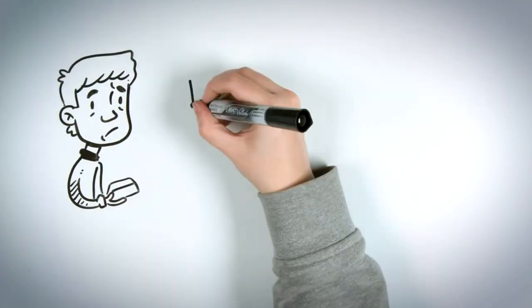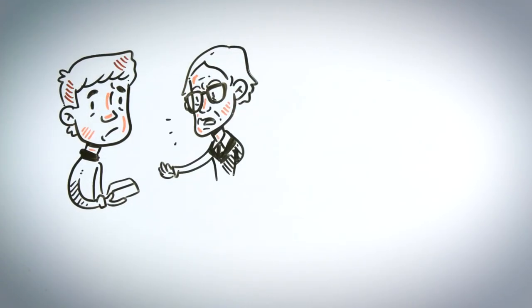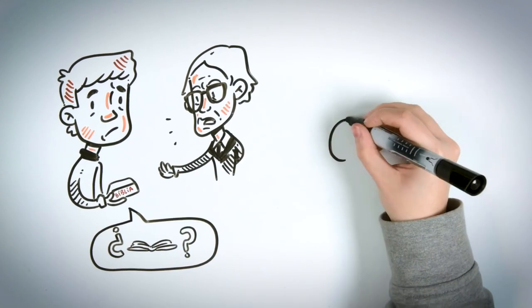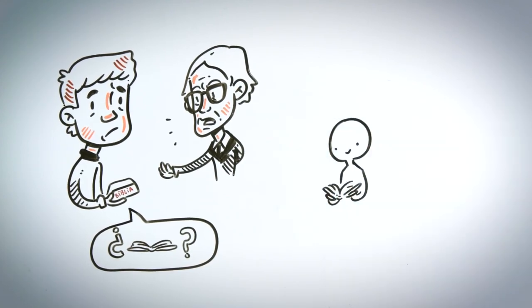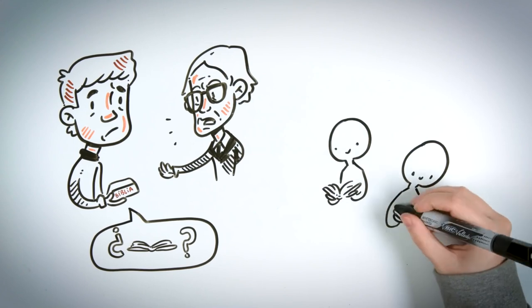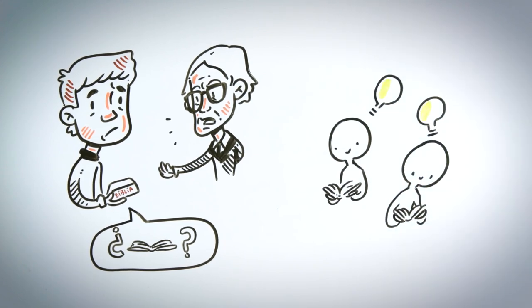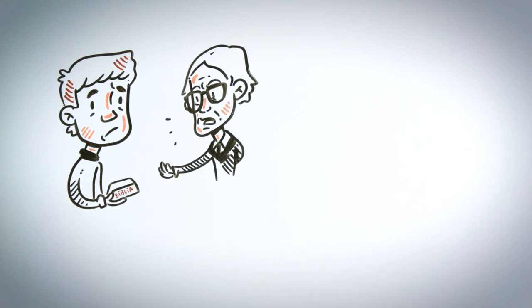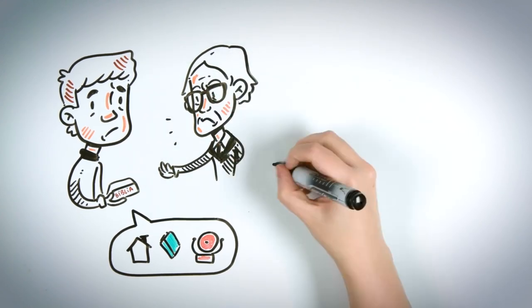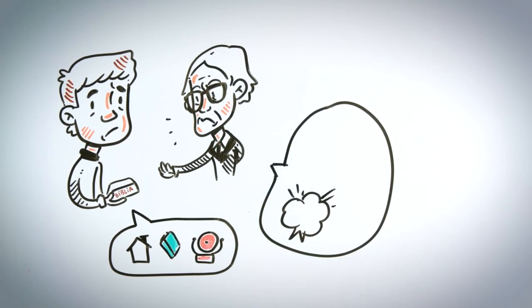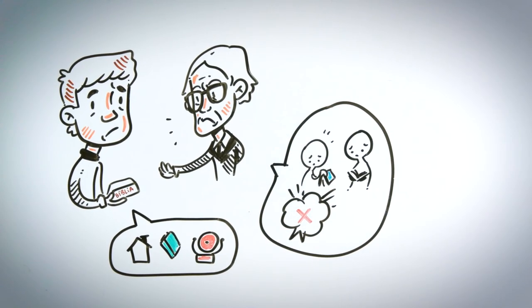When Montag arrives, he shows Faber the book and asks him to help him understand what is written. Faber explains that what society needs is quality information found in books, time to analyze it, and freedom to act on what they learn from it. Montag suggests that Faber hide books in the fire station and set off the alarm to discredit their reputation. But Faber insists that this would not solve the central problem, that it's best to hope that the war ends today's society, and that they can form a new society out of it.